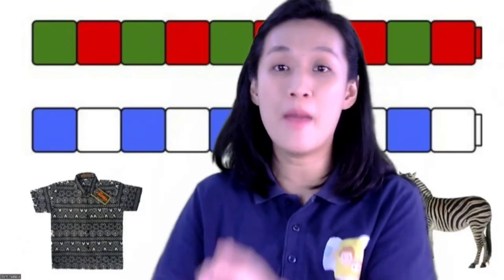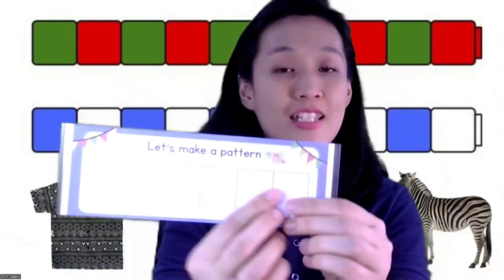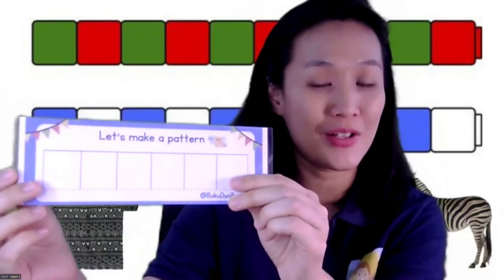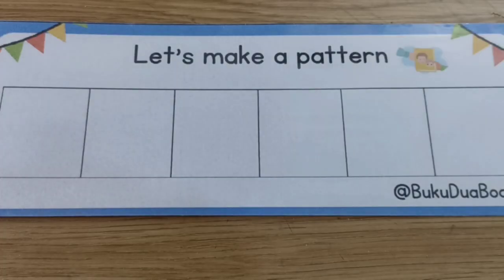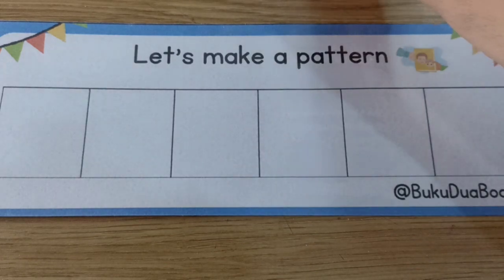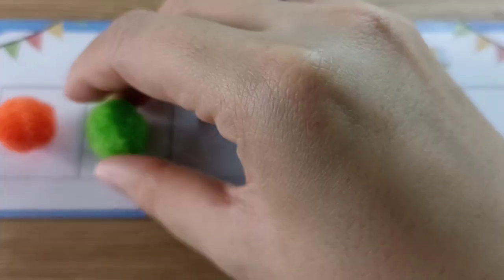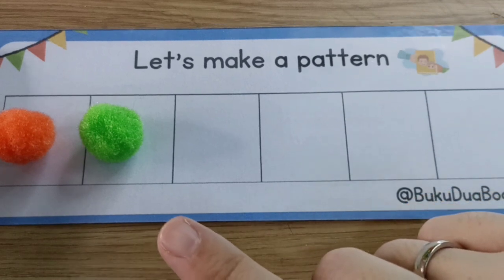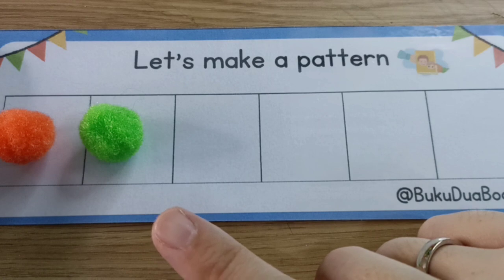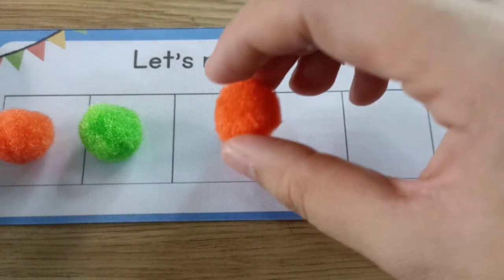Now, do you want to make a pattern, children? If you want to make your own pattern, you can take your pom-poms. Let's make a pattern. Put them on the table. Now, the first one: let's take orange pom-poms. Orange and green. Now let's make a pattern, children. Orange and green. So after green, orange again.